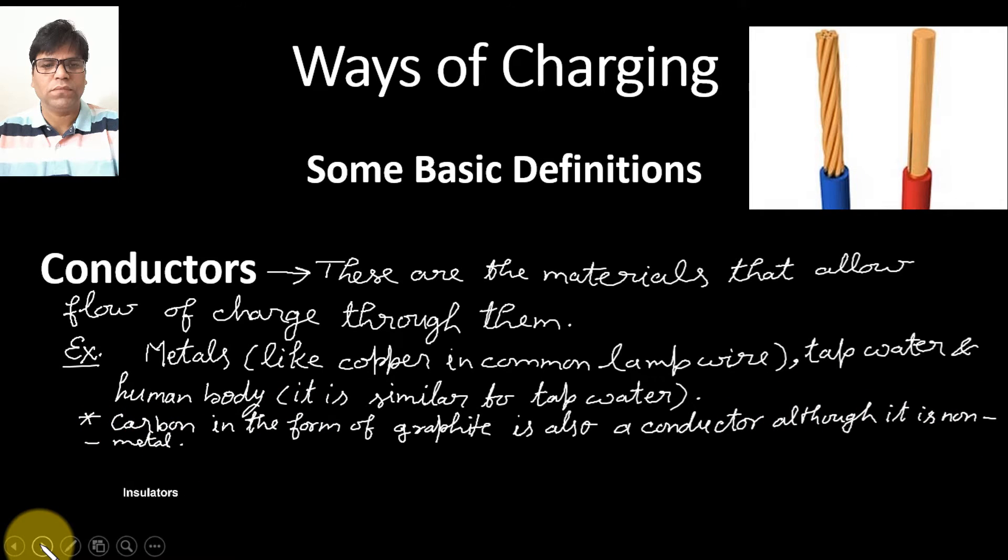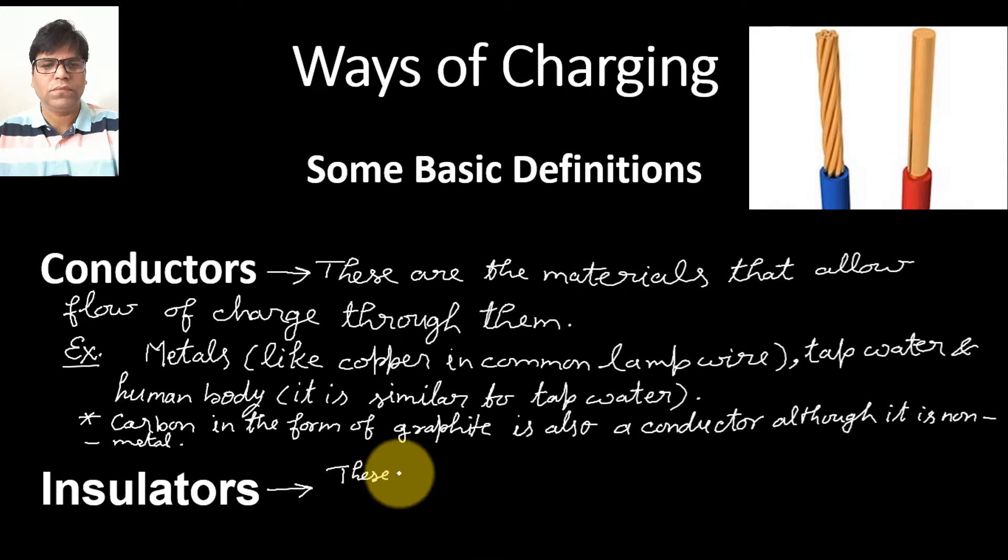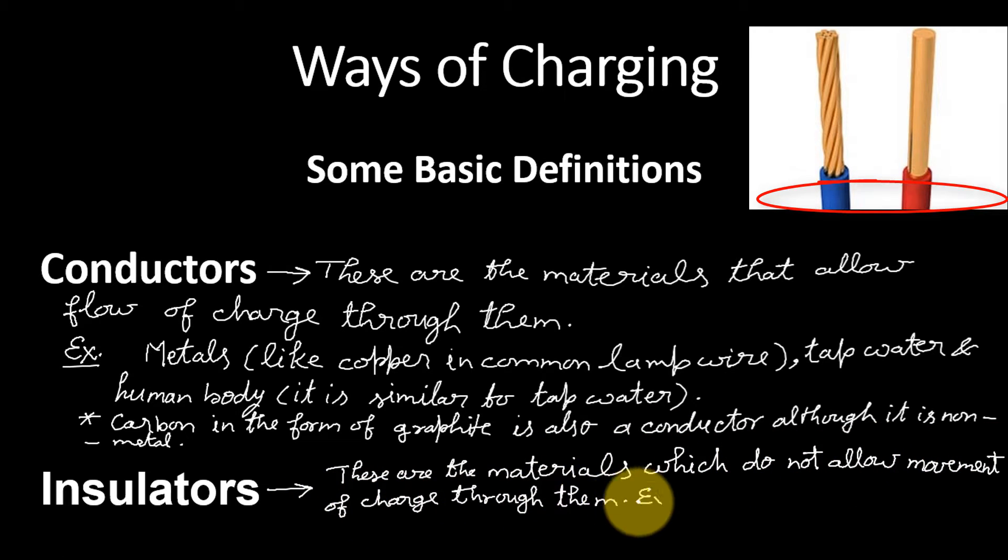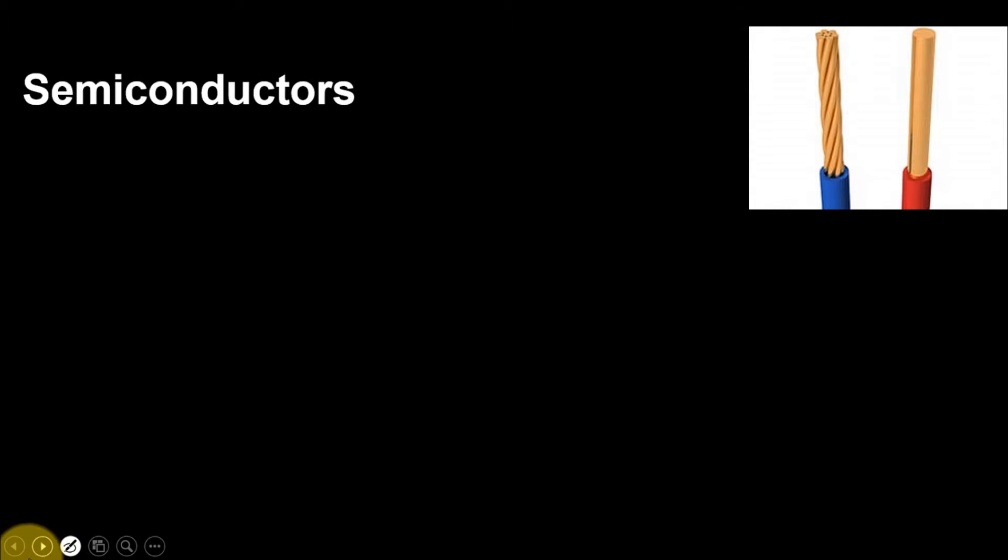Insulators. These are the materials which do not allow movement of charge through them. Examples are rubber, plastic, glass and chemically pure water.